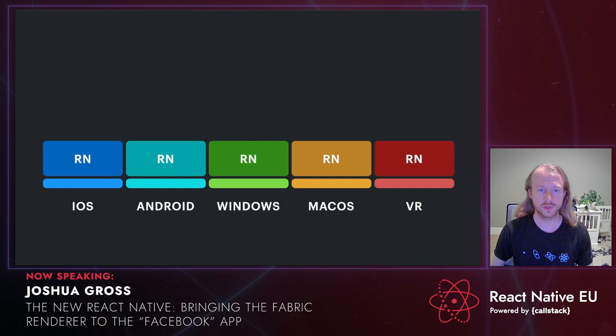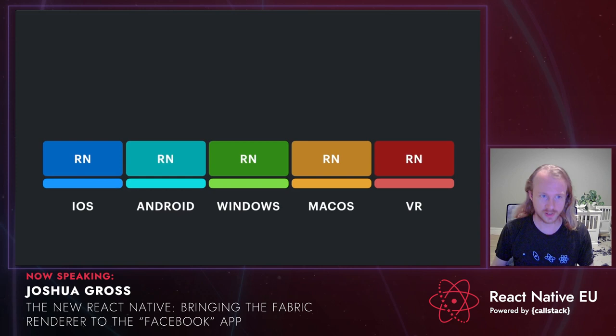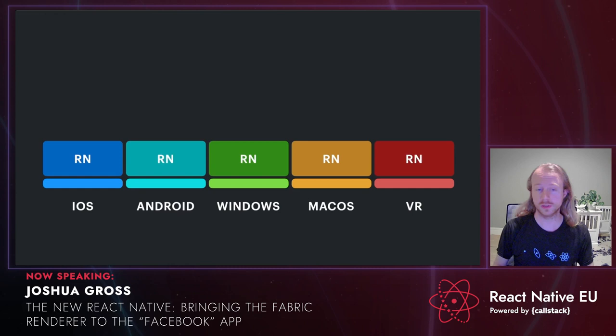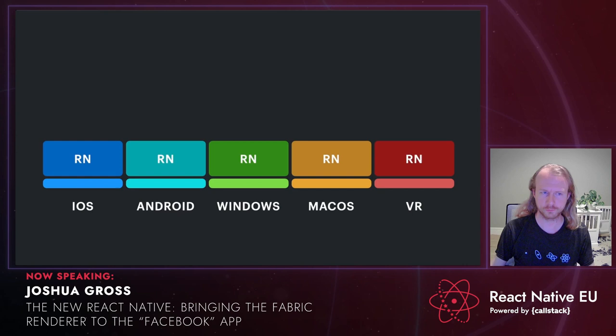React Native is written — and essentially rewritten — in Java for Android, Objective-C for iOS, C++ for Windows, and so on. Basically, every one of these platforms is a full, unique re-implementation of React Native. They attempt to behave the same way, but they don't all behave exactly the same way.